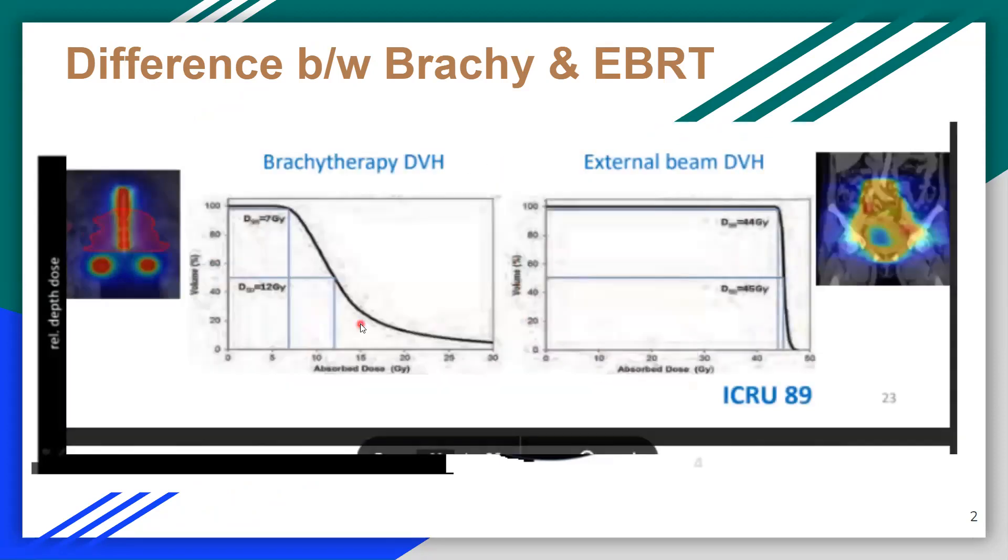Another difference, you can see the dosimetry and the doses. This is the brachytherapy dose and this is how the DVH looks, but in external beam, this is what we are looking for. So this is the difference, that we need to reduce the dose which surrounds them, and that can only be achieved with brachytherapy as compared with external beam radiotherapy.